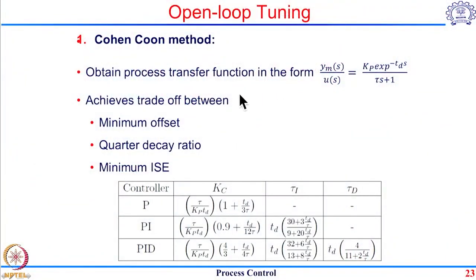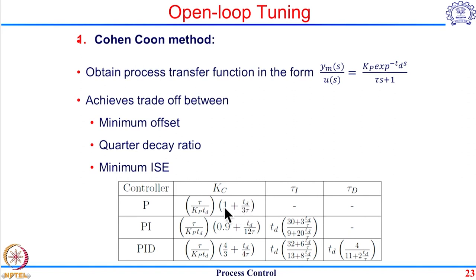The Cohen-Kuhn method obtains the transfer function as a first order plus dead time model and tries to achieve a good trade-off between minimum offset, quarter decay ratio, and minimum integral of squared errors. For a proportional controller, the best value of the gain is given by a formula dependent on Kp, tau, and Td. For a PI controller, both the gain and integral time constant are calculated. For a PID controller, these are the values recommended by Cohen and Kuhn.